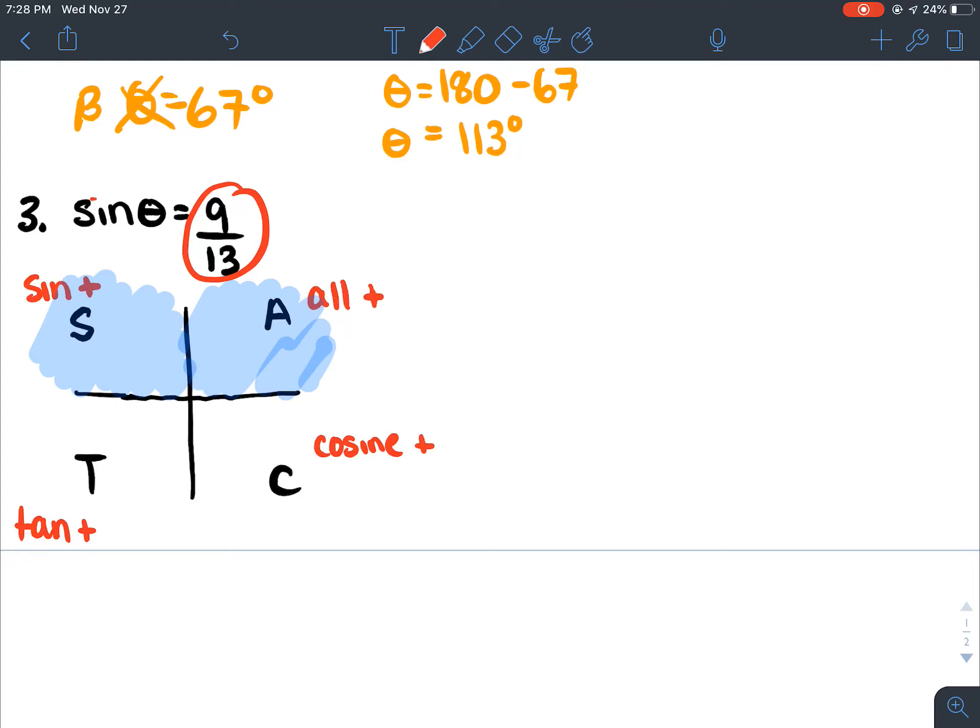So to find it, I would just find it like I find any other angle, and do the inverse sine of 9 over 13, which turns out to be 44 degrees, which just tells me that that's in this quadrant right here, this is 44 degrees, and if sine is opposite over hypotenuse, I know my triangle would look like that.